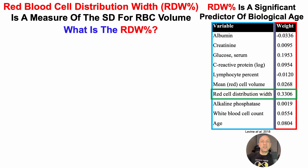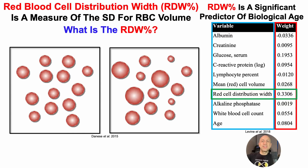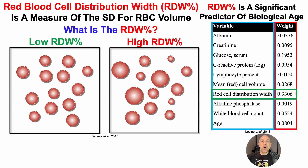So what is the RDW percentage? It's a measure of the standard deviation for red blood cell volume. Visually, on the left we've got the situation where there's a low RDW percentage — in other words, all the red blood cells are mostly the same volume, so the standard deviation is relatively small. In contrast, on the right, there's a heterogeneous population of red blood cells in terms of size, with some very large and some very small — that would be a relatively higher RDW percentage.